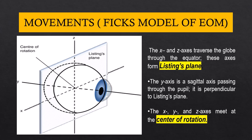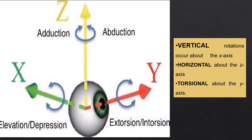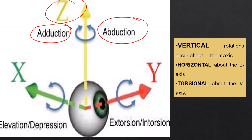The movements occur along three axes: the X axis, the Z axis, and the Y axis. The X and Z axes are present in one single plane called the listing plane. The Y axis is the anterior-posterior sagittal axis passing through the pupil, perpendicular to the listing plane. All X, Y, and Z axes meet at the center of rotation of the eyeball. Adduction and abduction occur along Z; supraduction and infraduction along X; excycloduction and incycloduction along Y.